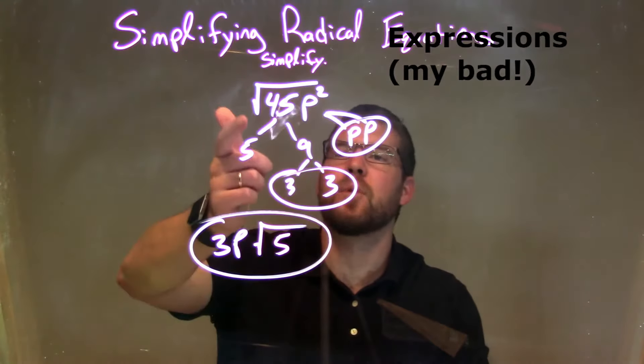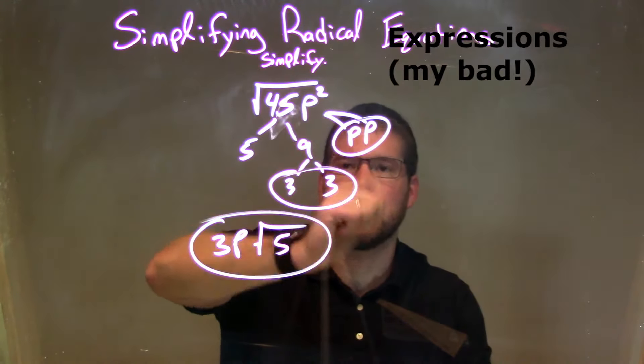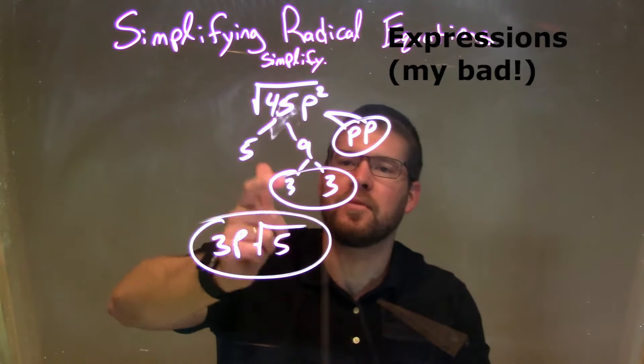So let's recap. We're given the square root of 45p squared. p squared broke down to be p times p, and 45 was 5 times 3 times 3.